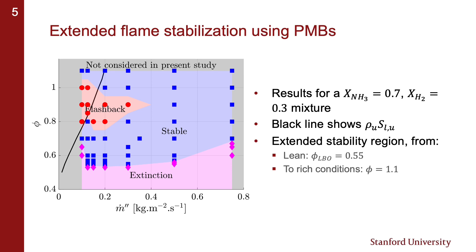Let's move on to the results. You can see here on the left a stability map obtained with this burner for a fuel composition of 70% ammonia and 30% hydrogen by volume. The black line shows the laminar consumption speed — ρ times the laminar flame speed — of the unburnt mixture at ambient conditions as a function of equivalence ratio. The stable operating region of the burner is shown in blue, and the lean extinction limit is at an equivalence ratio of around 0.55. There is also a fairly large flashback region observed for flame compositions close to stoichiometry and low flow rates.